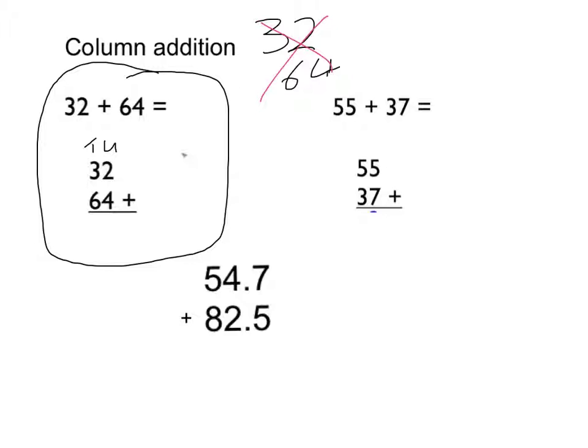Once we've done that, we always start on the right hand side, so we kind of work backwards from right to left, the opposite to how we read. So in this example here, my first step, I start on the right, 2 add 4 will give me my 6, 6 add 3 is 9.